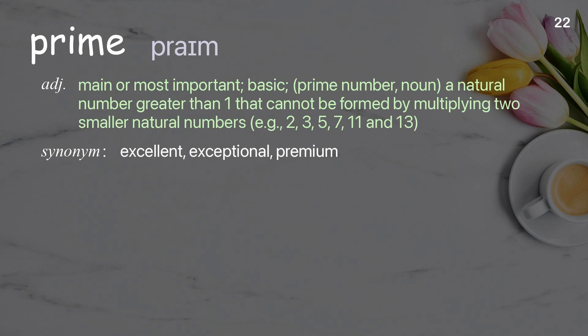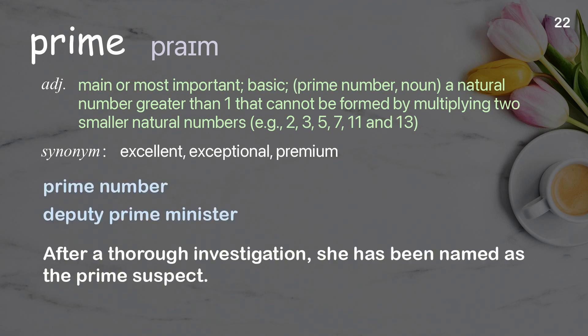Prime: Main or most important; basic. Prime number (noun): a natural number greater than one that cannot be formed by multiplying two smaller natural numbers, e.g., 2, 3, 5, 7, 11, and 13. Examples: Prime number. Deputy Prime Minister. After a thorough investigation, she has been named as the prime suspect.